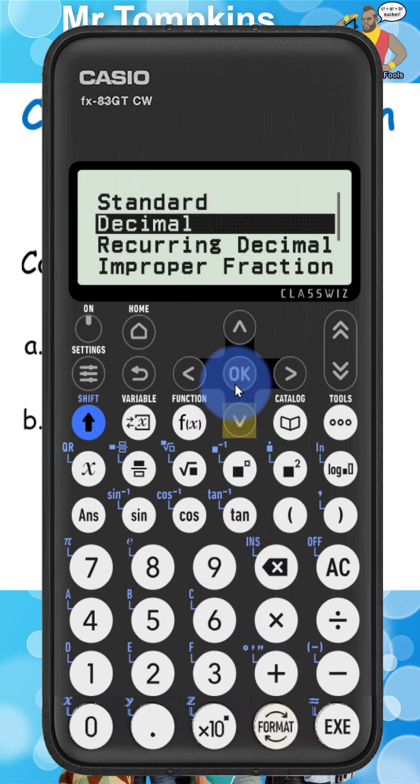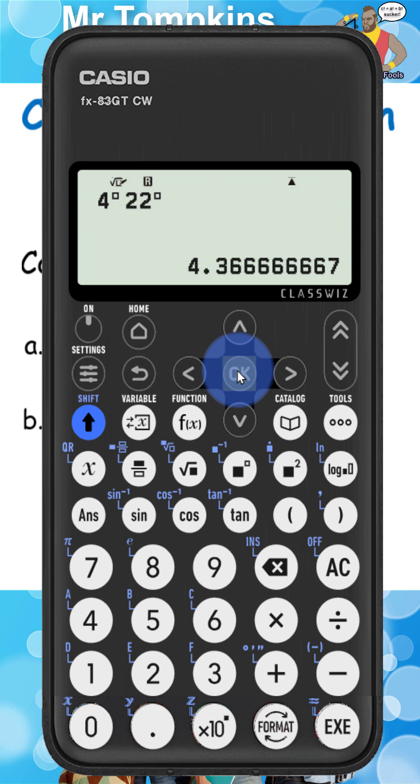This time, if I want it as a decimal, I'm going to have to press the format key and go down to where it says decimal and click OK. And again, it's written it down as 4.366666667, which I can round off to 4.37.